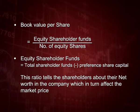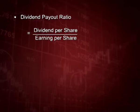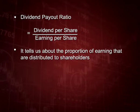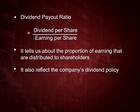This ratio tells the shareholder about their net worth in the company, which in turn affects the market price. The next ratio is dividend payout ratio, calculated by dividing dividend per share by earning per share. It tells us about the proportion of earnings distributed to shareholders. The company may be earning more but declaring less dividend due to future plans, and it also reflects the dividend policy adopted by the management.